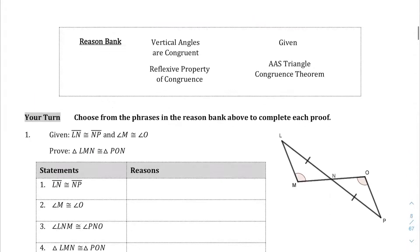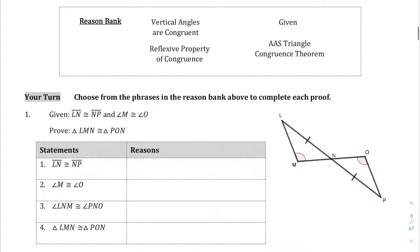We're going to jump into some proofs and try to prove whether or not two triangles are congruent using the angle-angle-side triangle congruence theorem. So if we look at your turn number 1 here...